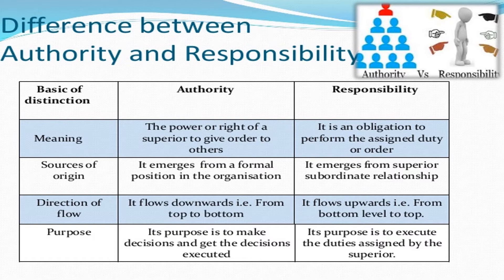In terms of source of origin, authority emerges from a formal position in the organization, while responsibility emerges from the superior-subordinate relationship. For direction of flow, authority flows downwards — top to bottom — while responsibility flows upwards — bottom to top. The purpose of authority is to make and execute decisions, while the purpose of responsibility is to execute the duties assigned by the superior.